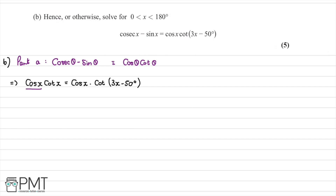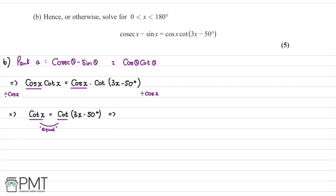We notice we have cos x on both sides, so we divide both sides by cos x. This leaves us with cot x equals cot(3x minus 50 degrees). Since the cot functions are equal, we can equate their arguments: x equals 3x minus 50. Solving this gives 2x equals 50 degrees, and therefore x equals 25 degrees as our first solution.